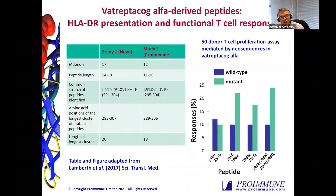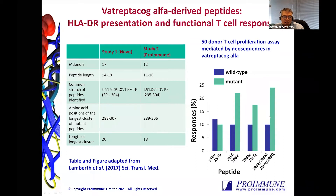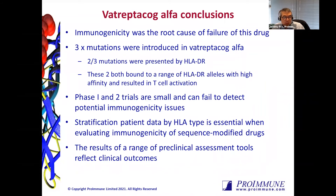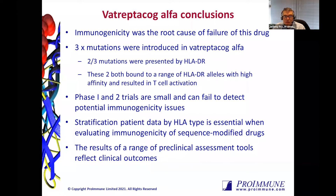That's pretty unfortunate. But when you actually look at the fact that these sequences drove a functional T-cell response using T-cell proliferation assays, the 158 mutation showed no difference in T-cell response compared to wild-type and mutant. But when we look at either the individual mutations or the mutations combined, the mutants gave a really significantly enhanced T-cell response. The conclusion was that immunogenicity was the root cause of the failure of this drug. Two out of three mutations were presented by DR, and additional studies showed this was quite high affinity and resulted in T-cell activation. Stratification of patient data by HLA type is also really important when evaluating immunogenicity of sequence-modified drugs.